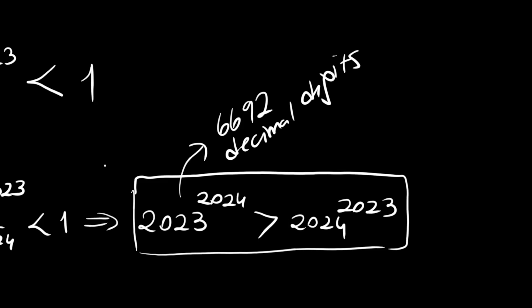And the other one is 6689 decimal digits. Thank you for watching and see you in the next video.